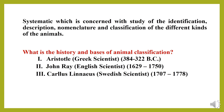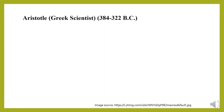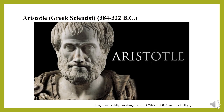The basis of animal classification was described by various scientists such as Aristotle, John Ray, and Carlos Linnaeus. Aristotle is also known as the father of zoology. He was the first to point out that animals could be grouped on the basis of their characteristics. He classified animals according to the presence or absence of red blood.